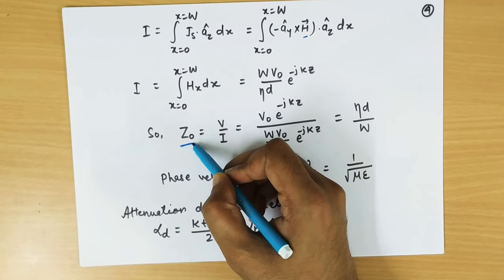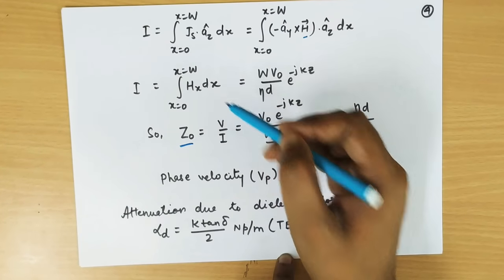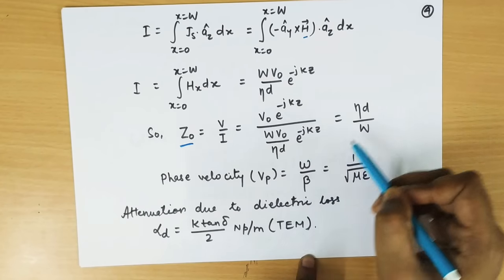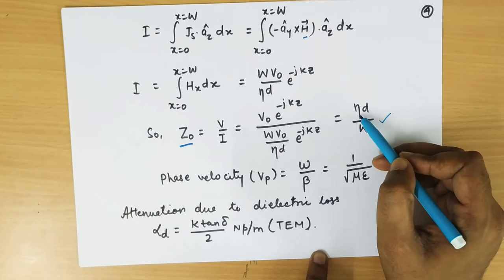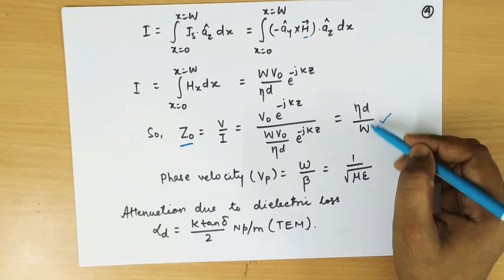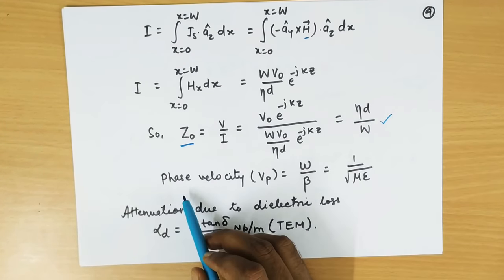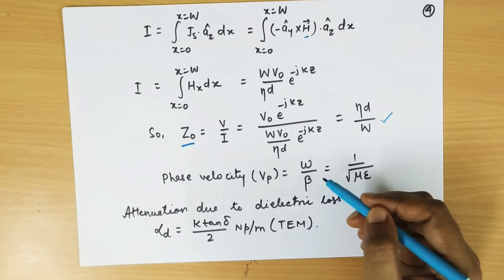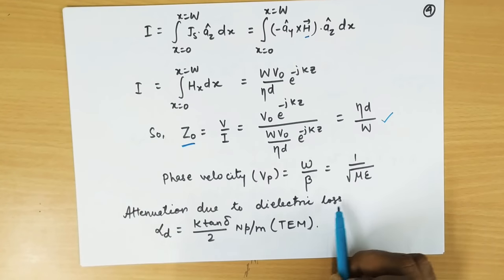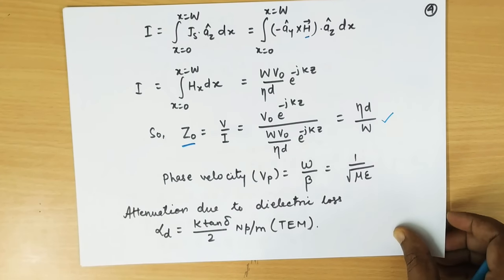The characteristic impedance of the parallel plate waveguide can be found by taking the ratio of voltage to current on the top plate. This gives a characteristic impedance of eta times D over W, which is constant throughout a particular waveguide since D and W are its dimensions, and the intrinsic impedance eta equals the square root of mu over epsilon is also constant. The phase velocity is omega over beta, equal to 1 over the square root of mu epsilon. For reference, the attenuation due to dielectric loss is alpha_D equal to k tan(delta) over 2 nepers per meter, valid for TEM mode.